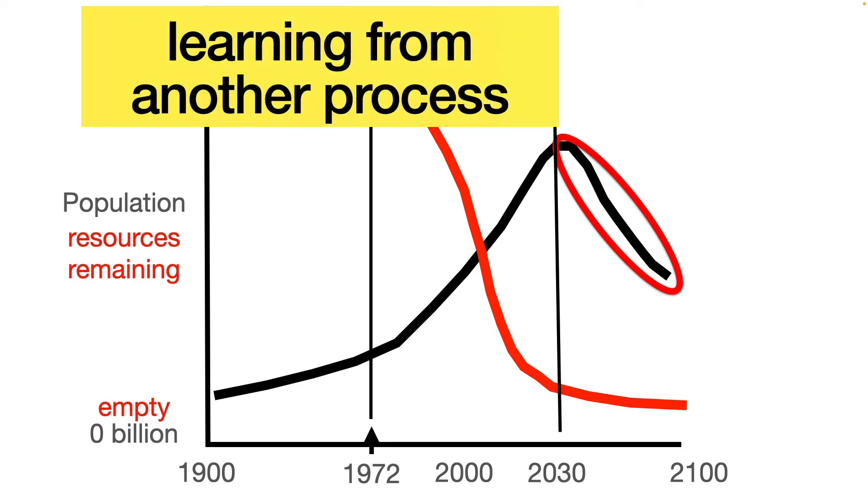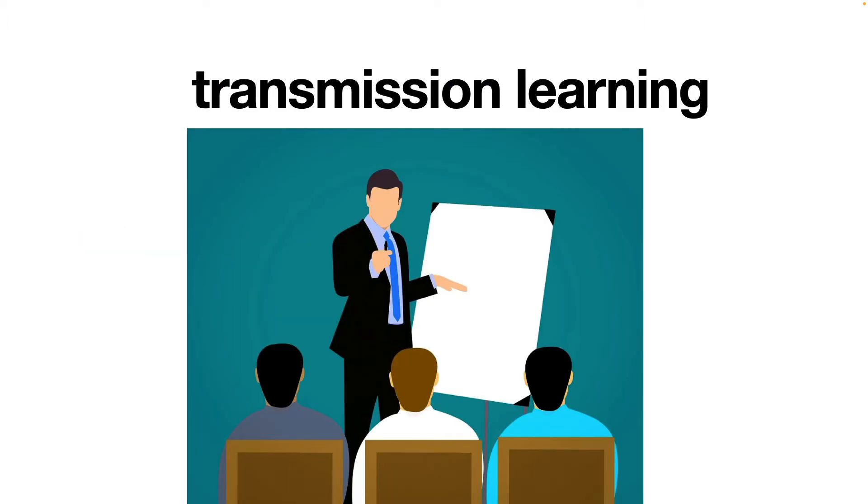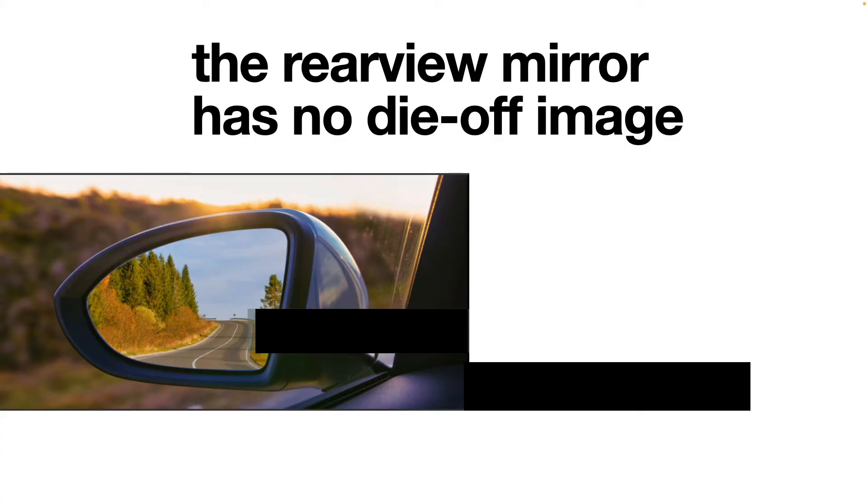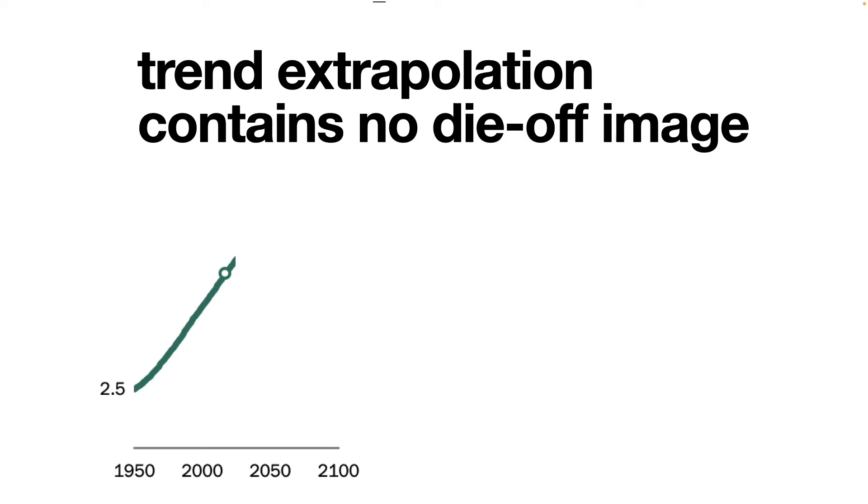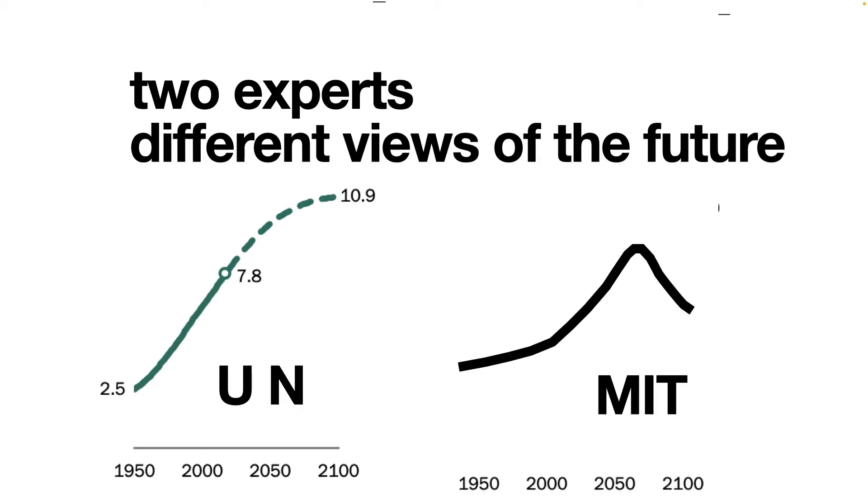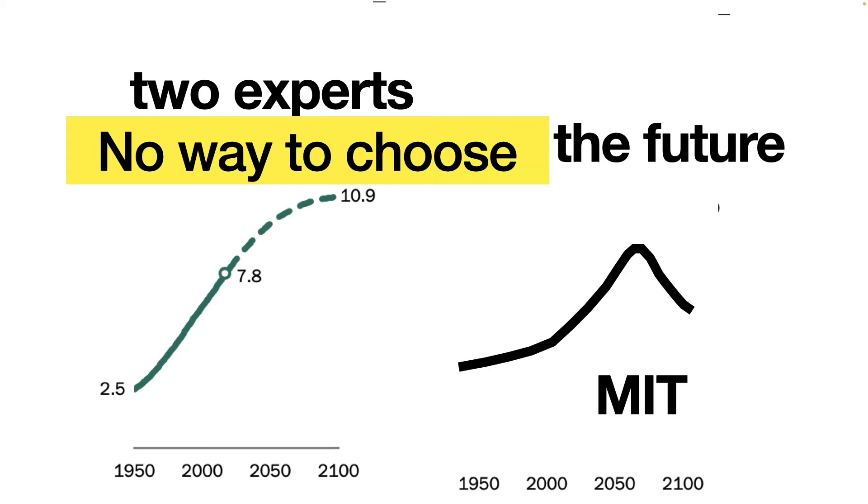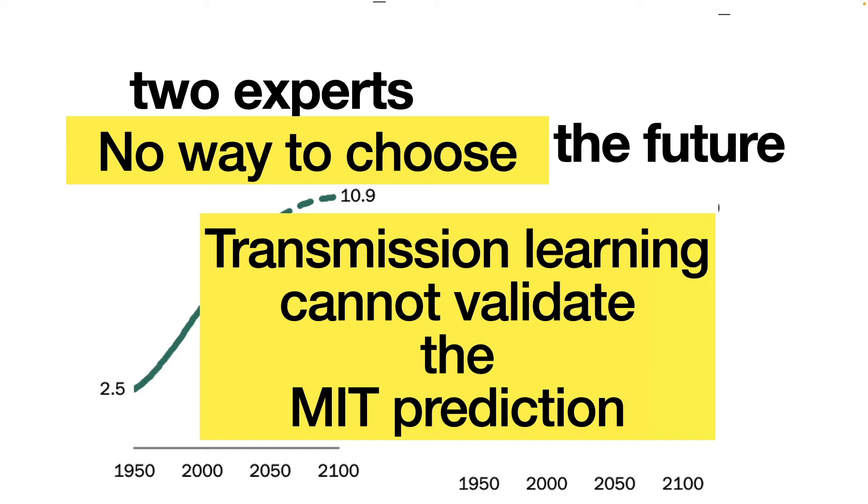That learning would have to be accomplished using another process. The second most common learning process is transmission. It occurs when experts convey their view of the future to the learner. Let me suggest why transmission learning is too weak to facilitate a clear enough view of a die-off event to let the learner take painful behavior to avoid it. When an expert uses historical information, the image he transmits contains no die-off from energy depletion. When the UN's population projections are based on fertility trends, they contain no die-off event. When experts present different views, they place the listener in a position of choosing which expert to believe. Most often, the listener has no process for determining which expert to believe. Thus, the MIT simulation's die-off suggestion could not be validated with transmission learning.